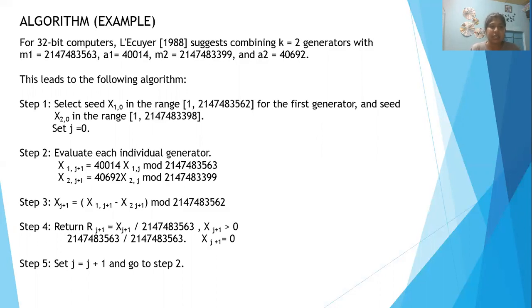and the seed for the second generator is selected from the same range, 1 to 214743398, 1 less than the modulus value. We set j equal to 0.